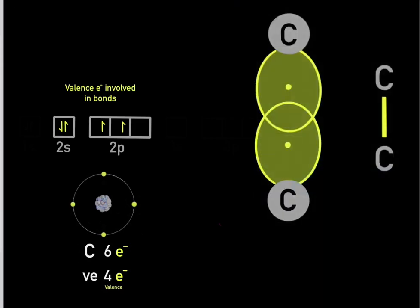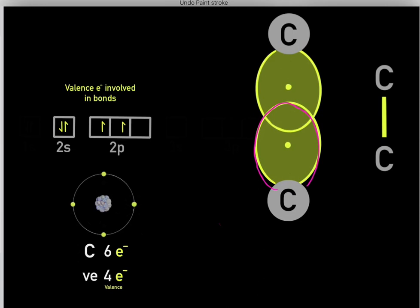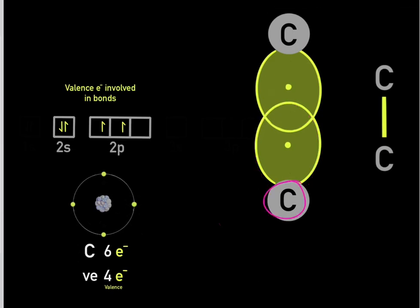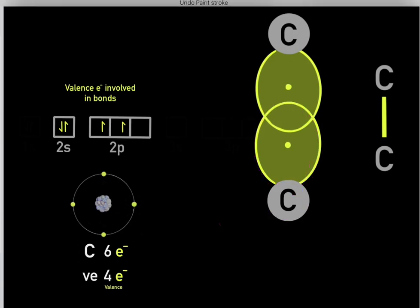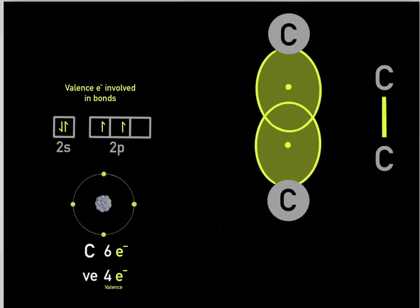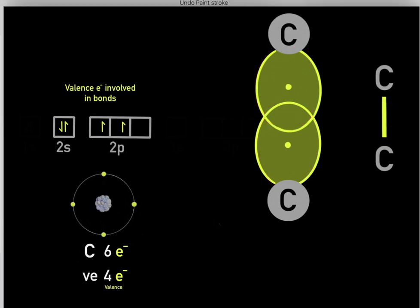When you have two electron orbitals overlapping one another, that's when you form a covalent bond. So if you have a carbon atom with its electron orbital and another carbon atom with its electron orbital, when you have electron overlap, that forms a covalent bond.